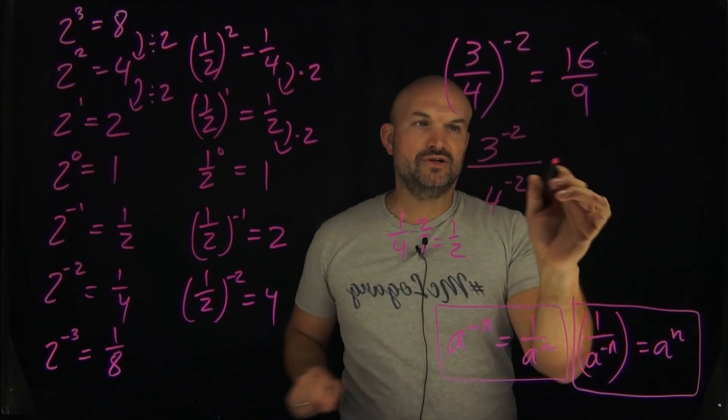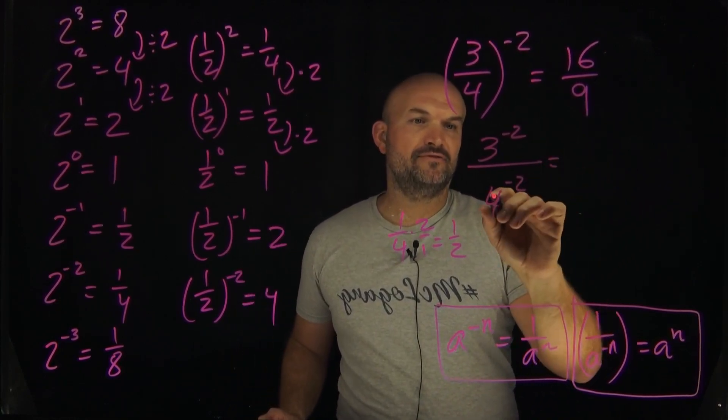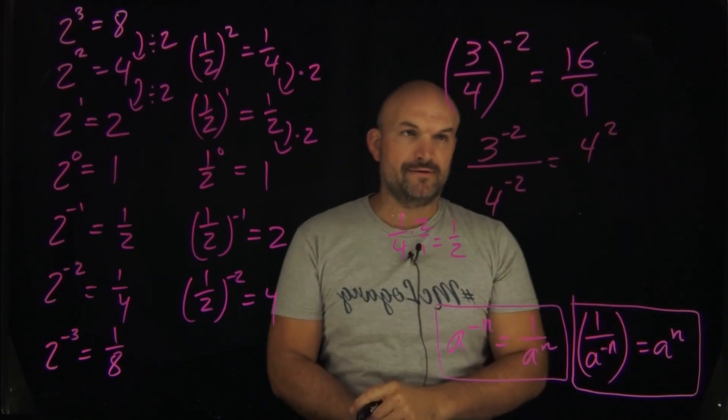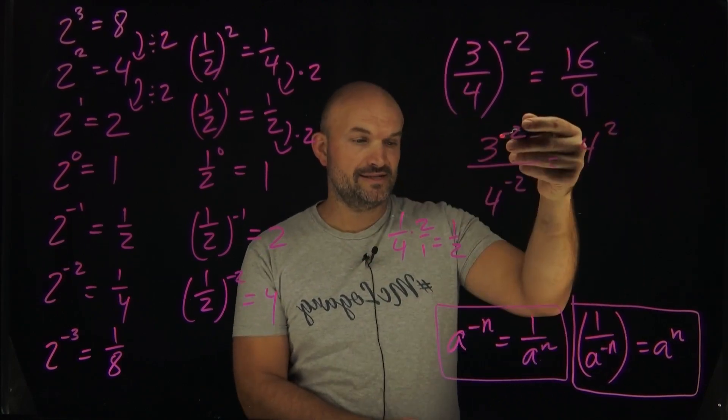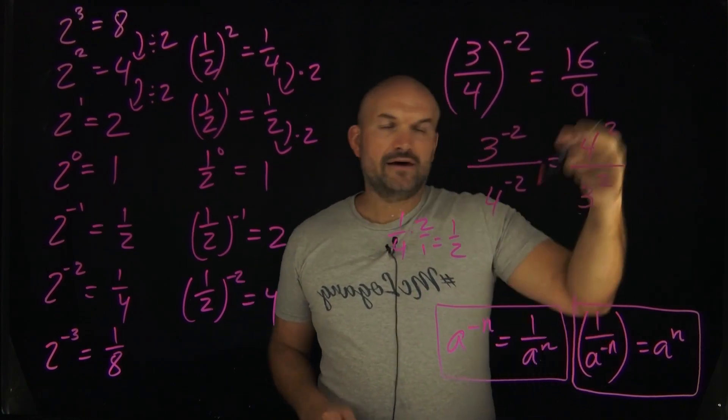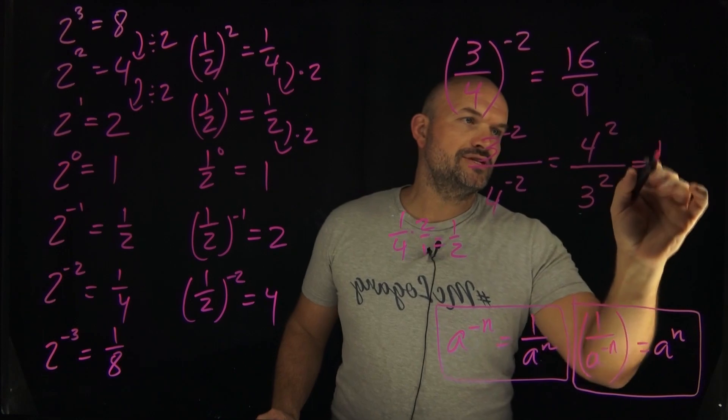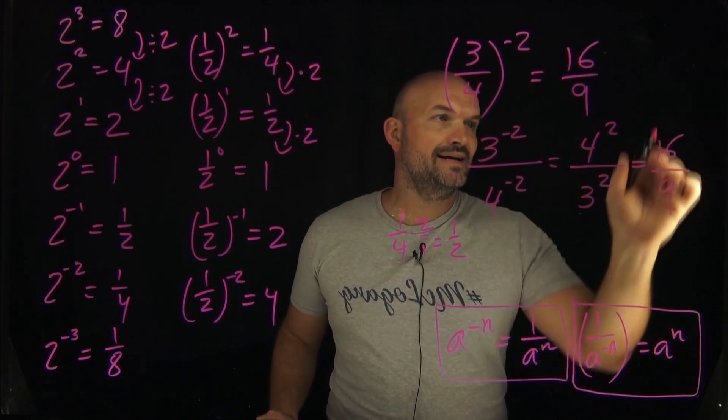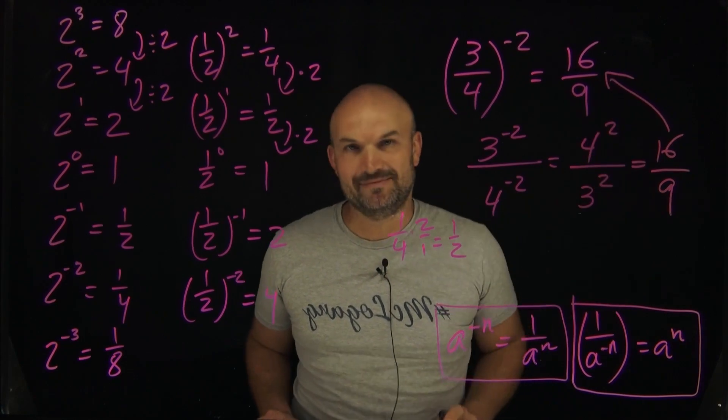Now applying these two rules, I can now say 4 to the negative second power, since it's in the denominator, it's the same thing as a 4 squared. 3 to negative second power, since it's in the numerator here, can now go in the denominator as a positive power. Now 4 squared is 4 times 4 which is equal to 16 and 3 squared is going to be 3 times 3 which is going to be a 9, and it's the exact same answer I got in my head.